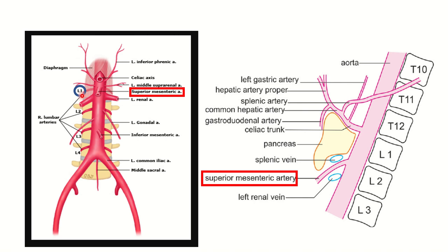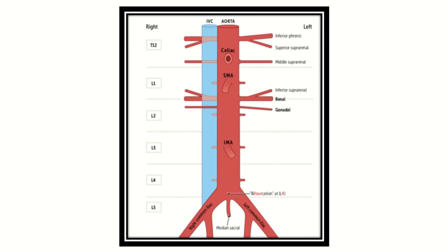The superior mesenteric artery arises at the level of lumbar one vertebra — this level is very important. In the second picture, a cross-sectional view of the branches of the abdominal aorta shows the vertebral levels. We can clearly see that the superior mesenteric artery arises at the lumbar one vertebral level.